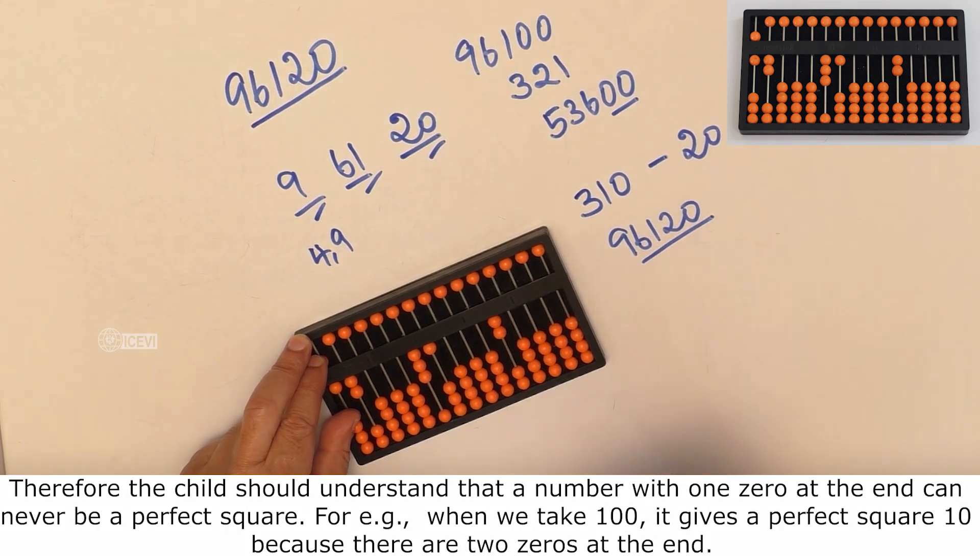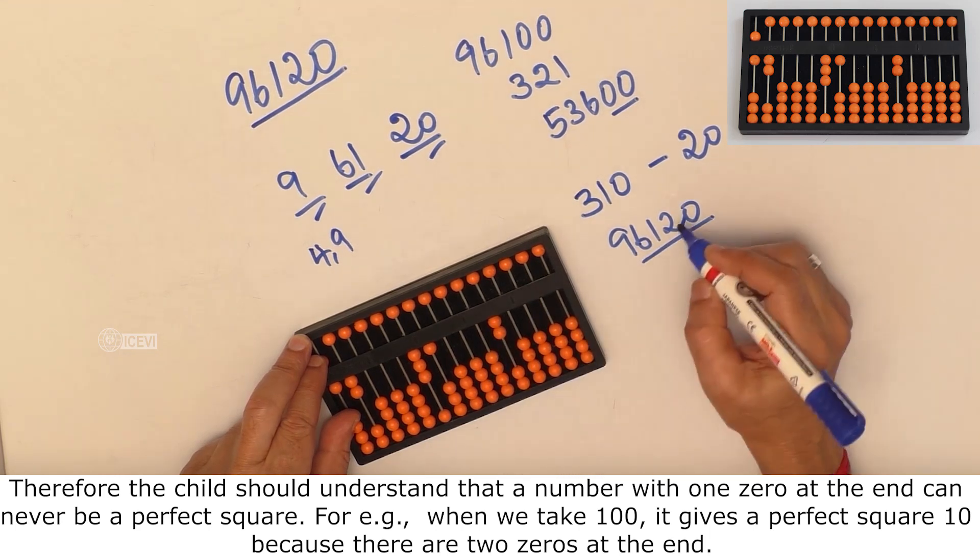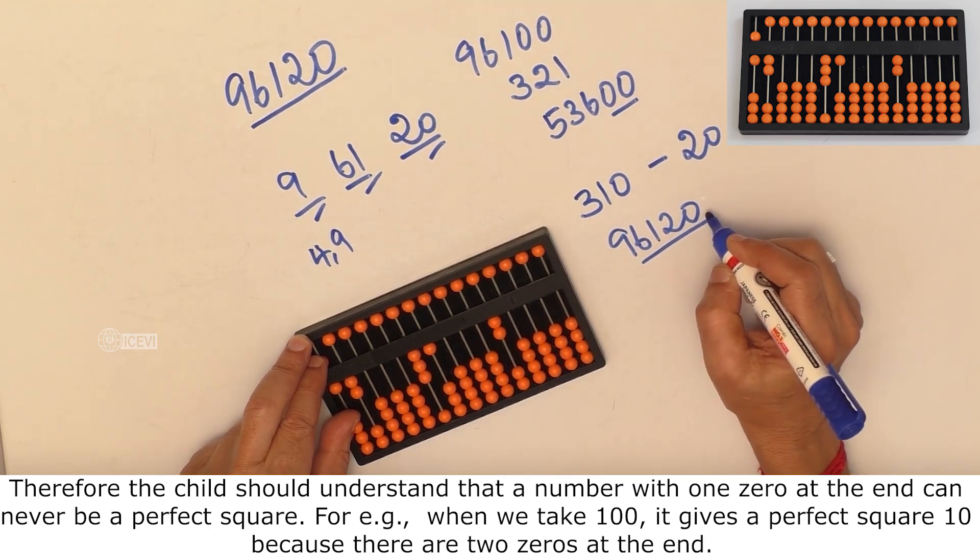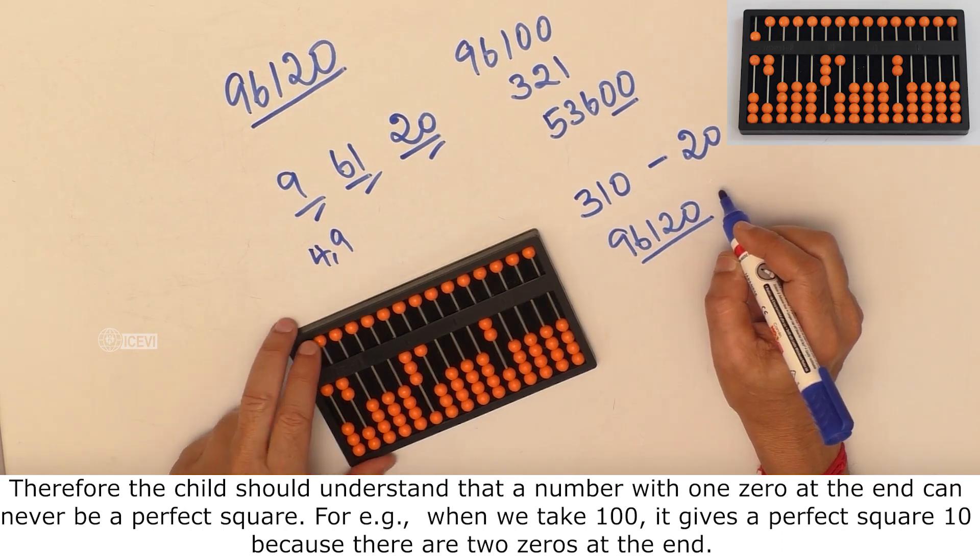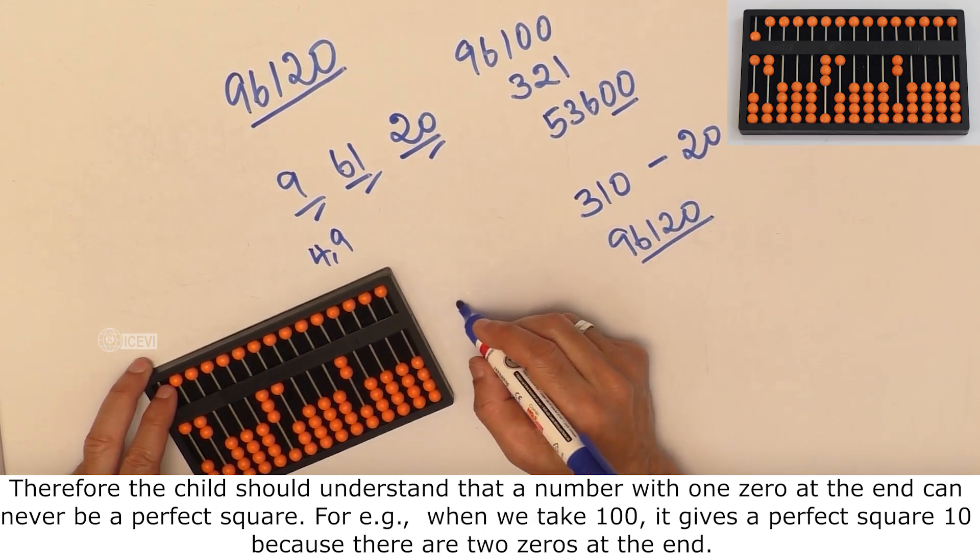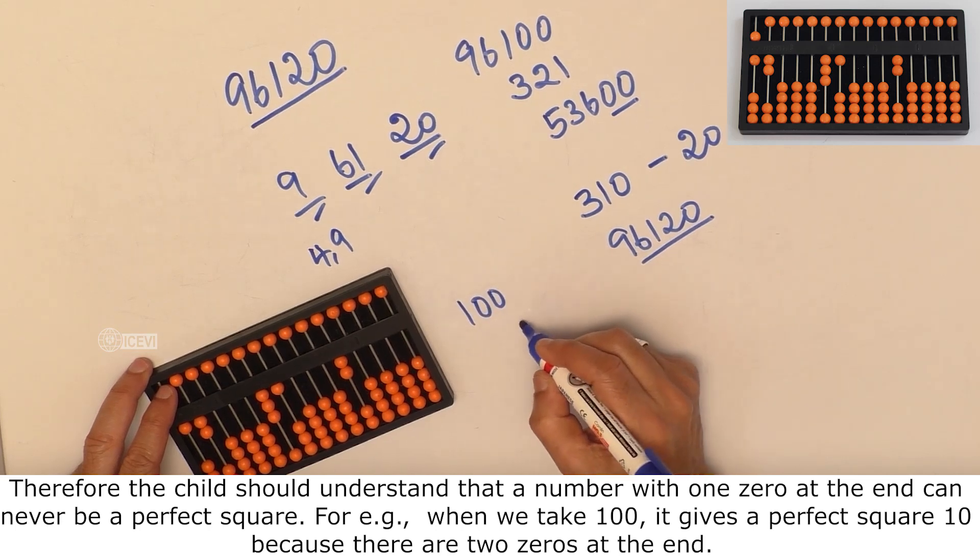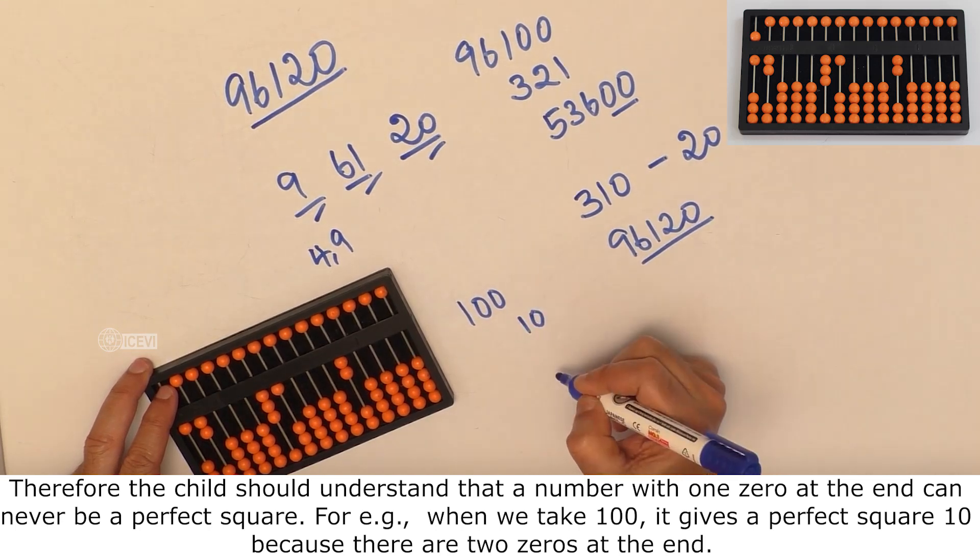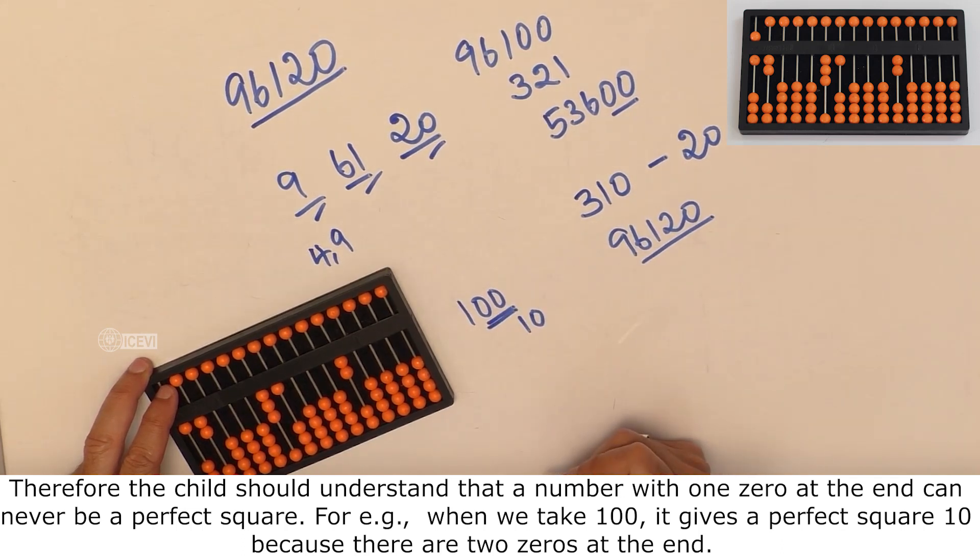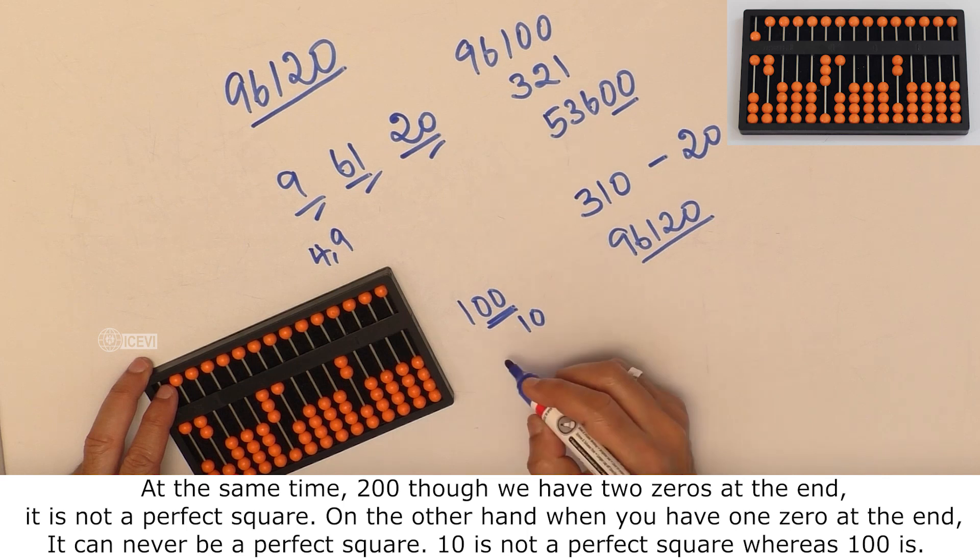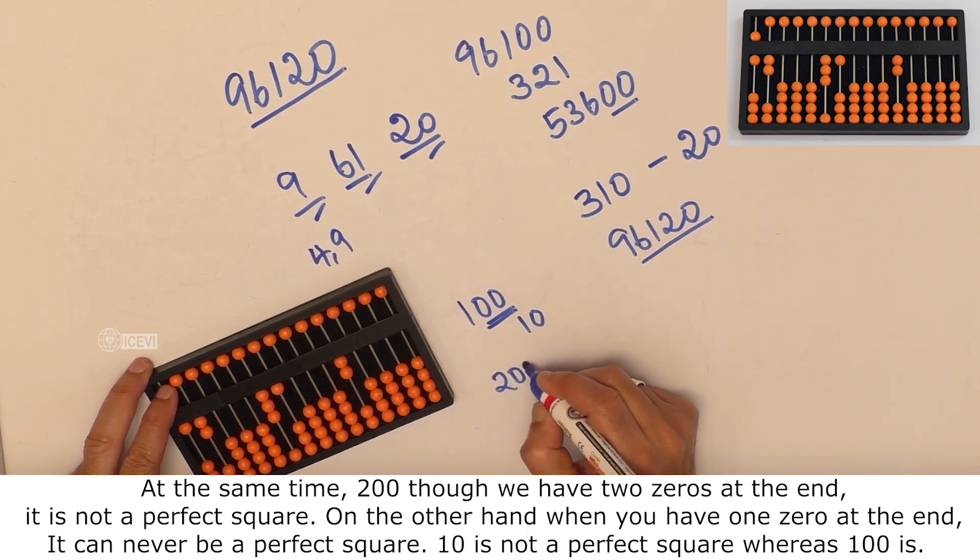Therefore, the child should understand that a number with 10 at the end can never be a perfect square. For example, when we take 100, it gives a perfect square of 10 because there are two zeros at the end. At the same time, 200,